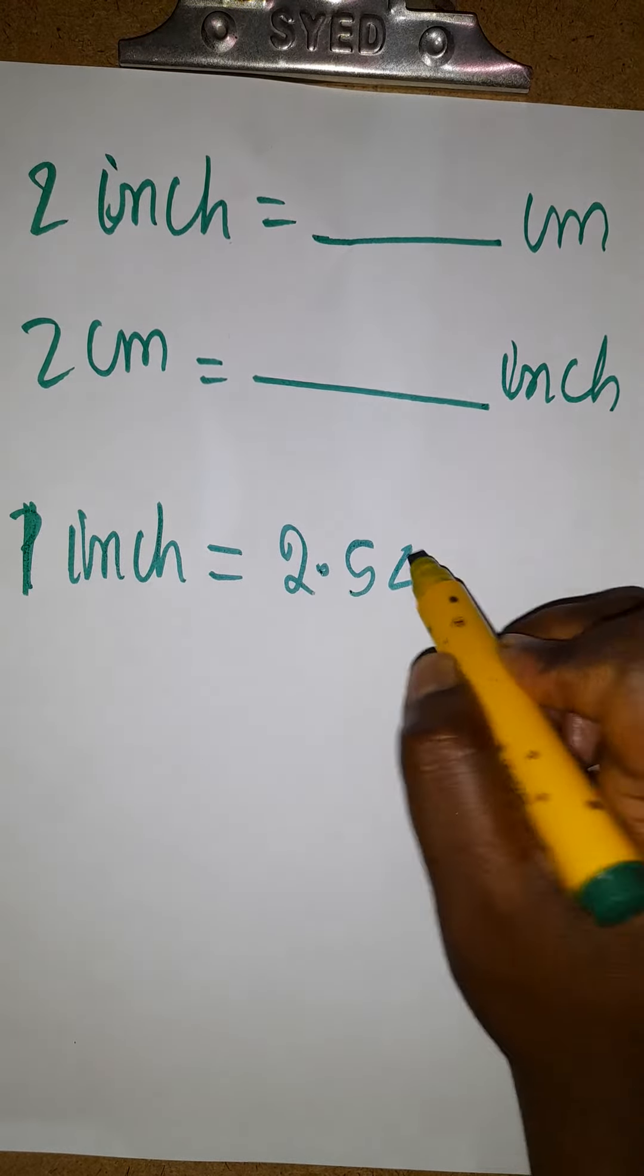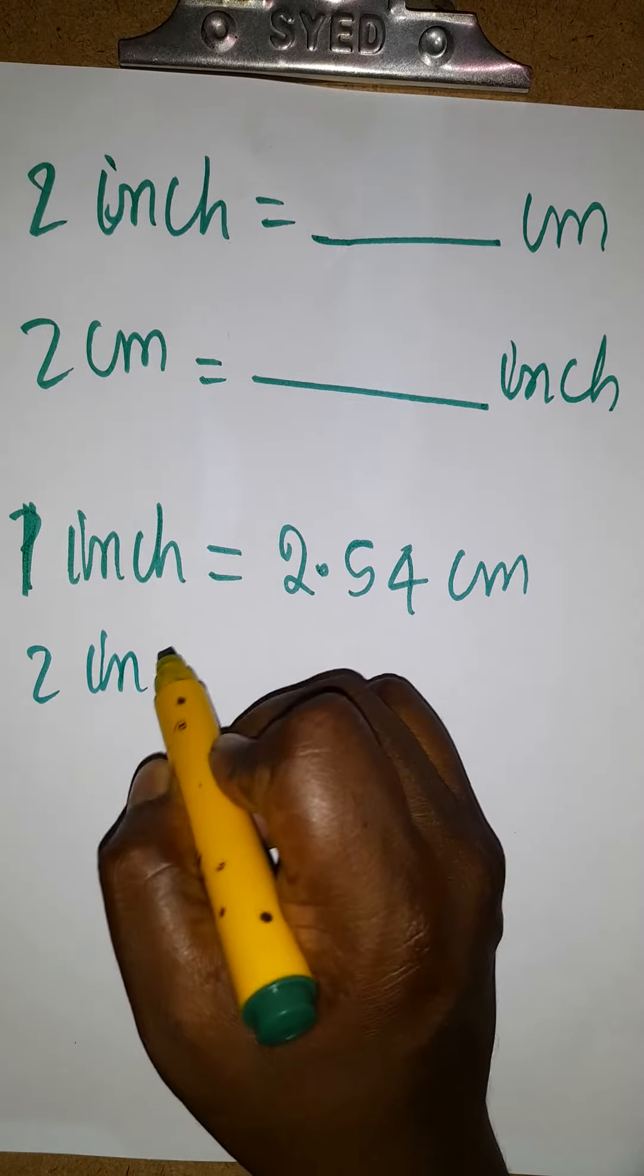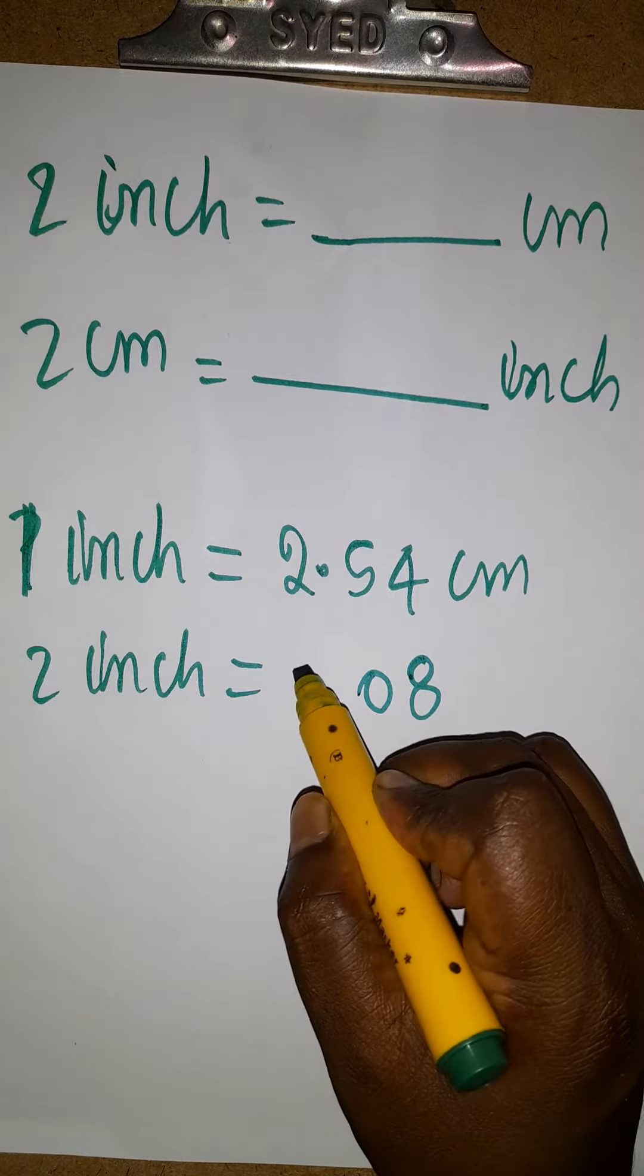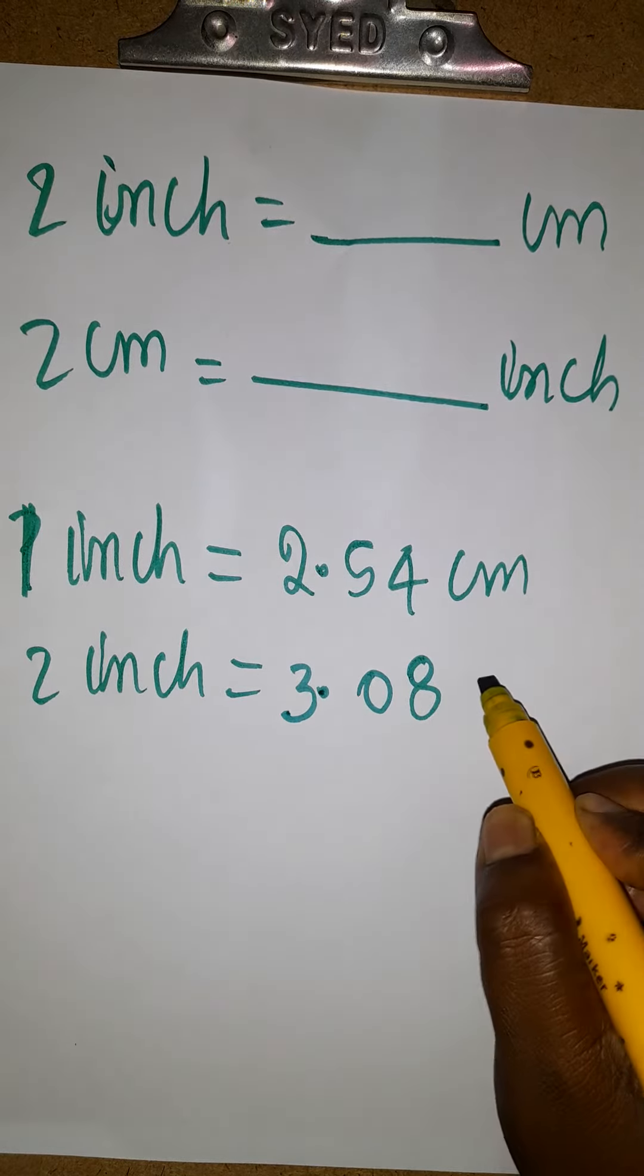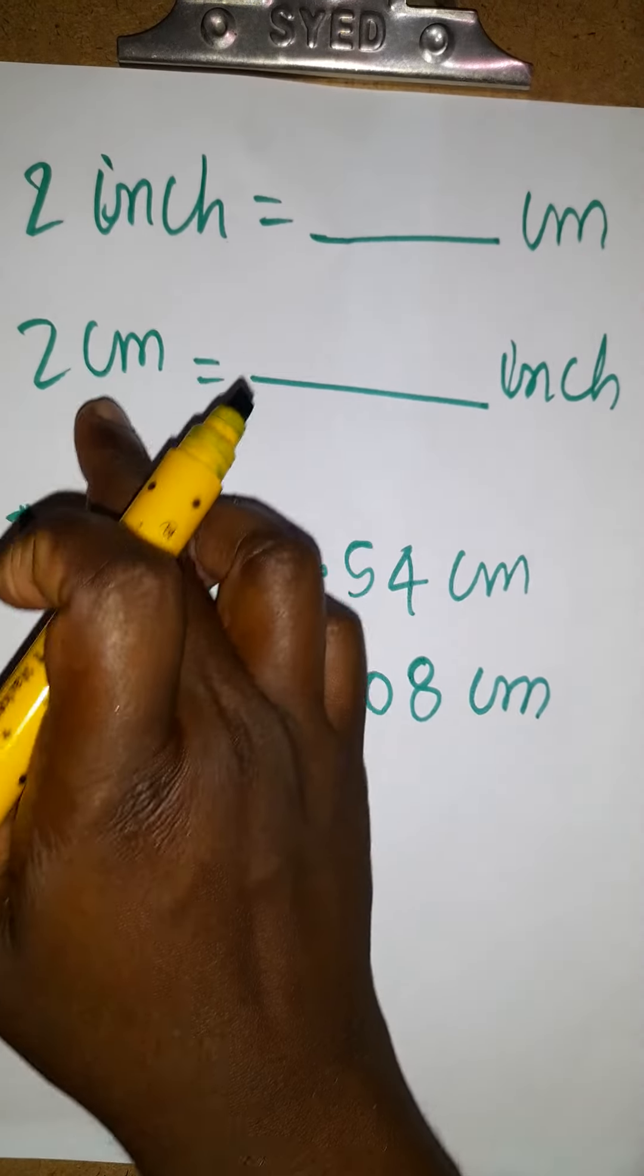If two inches, it's just a multiplication of two, so 3.08 centimeters. Same way we have to convert two centimeters to inches.